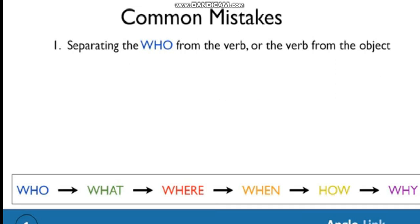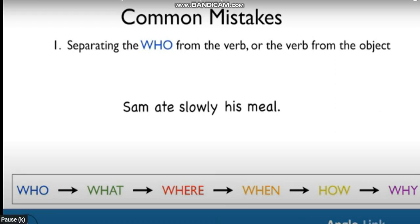Let's look at another example. Sam ate slowly his meal. Good. Correct. Please. It's unnatural. Sam ate his meal slowly.